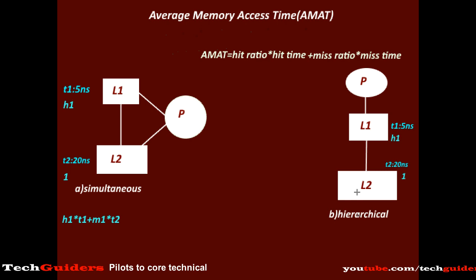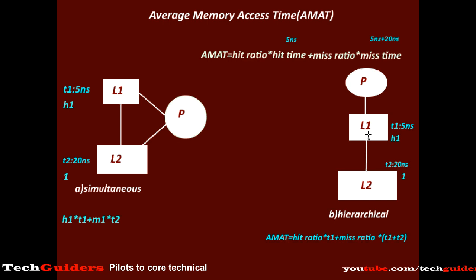In hierarchical access, when the processor refers to a word, L1 will be first accessed and searched, and only if it is a miss will the lower level be accessed and searched. So if it is a hit, the time taken is 5 ns. If it is a miss, then only we start searching in L2, hence an additional time of 20 ns will be taken. Thus the hit time is T1 but the miss time is T1 + T2. So in hierarchical access, the average memory access time is: H1 × T1 + M1 × (T1 + T2).